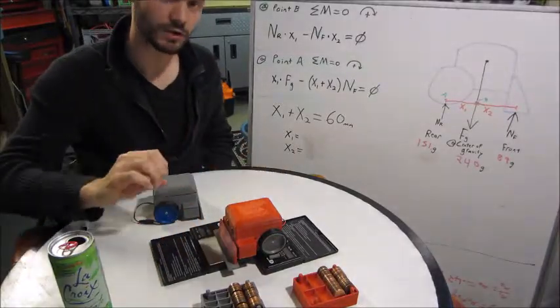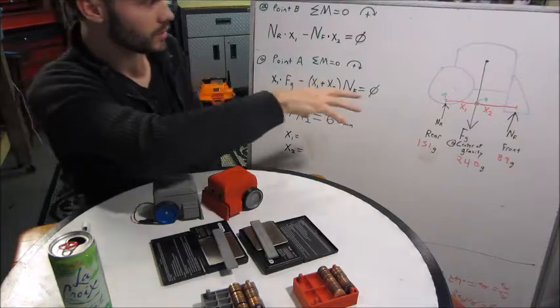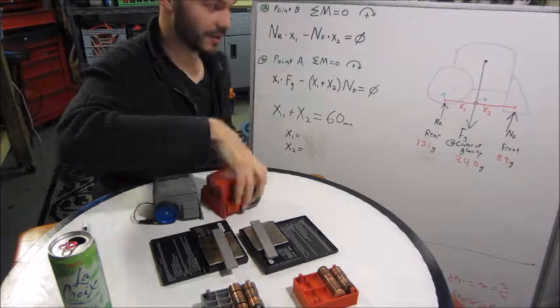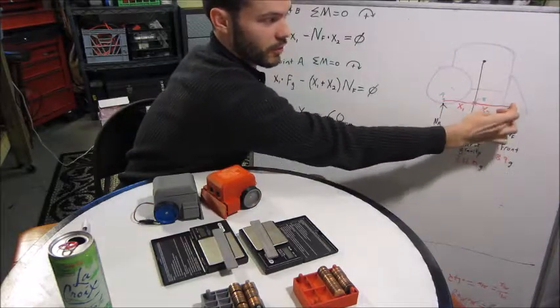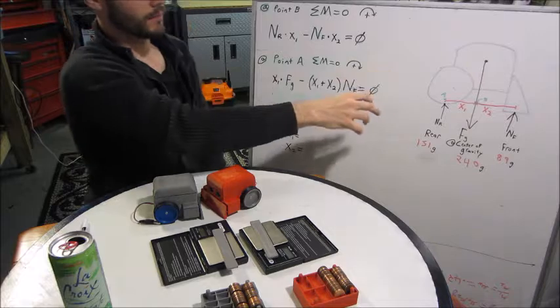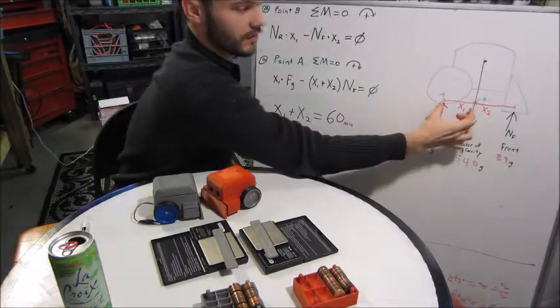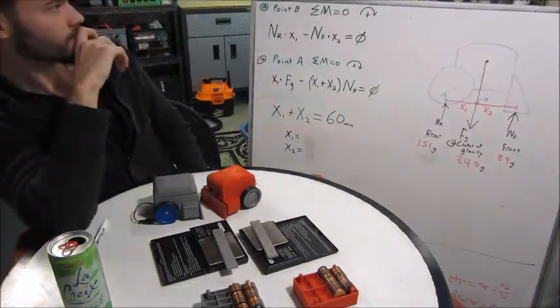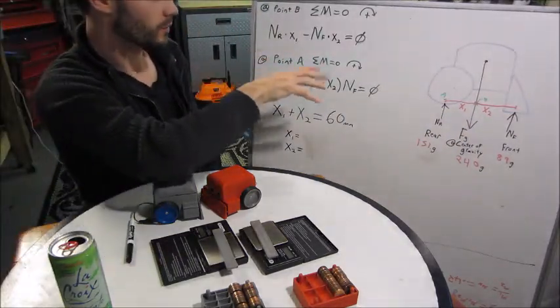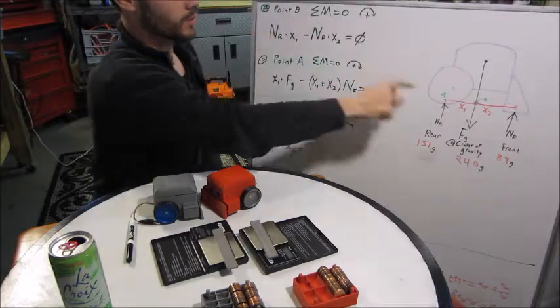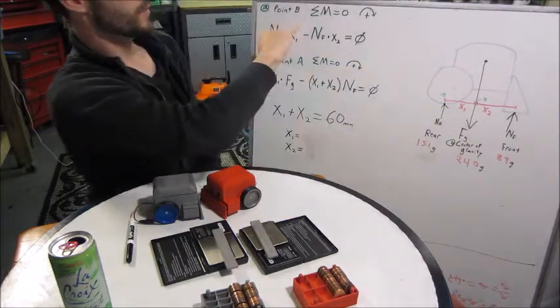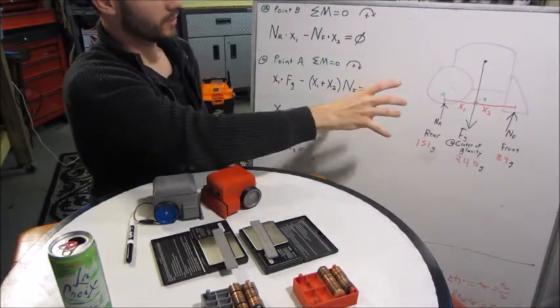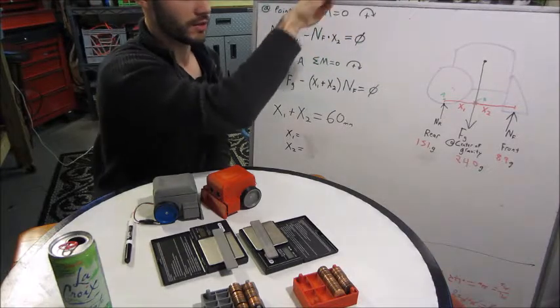This is just direct measurements that you can make. Using just that information, and also knowing—because I have CAD for these—I know exactly what the distance is between this point and this point. With that information, we can calculate exactly this x location of the center of mass. We start by saying at point B, which is right here, the sum of all the moments is equal to zero because it's not rotating. That statement is true.